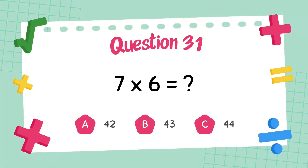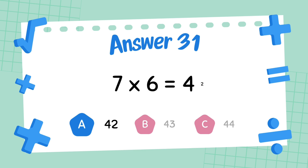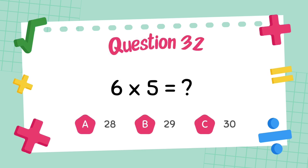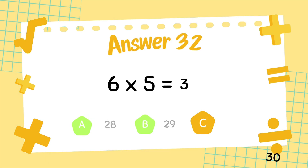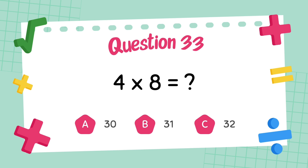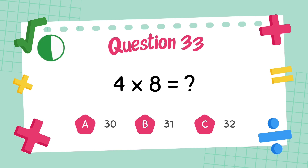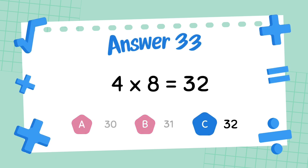What is 7 multiply 6? The answer is 42. What is 6 multiply 6? The answer is 32.